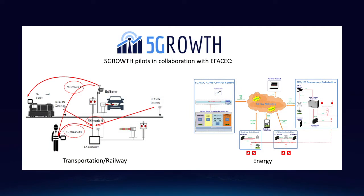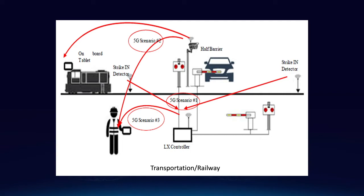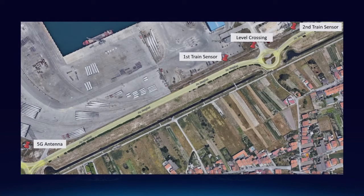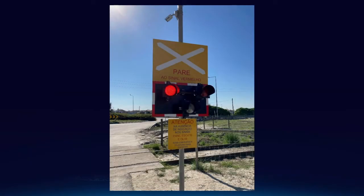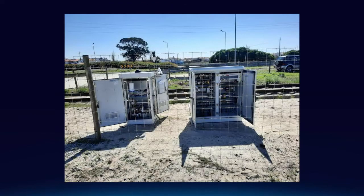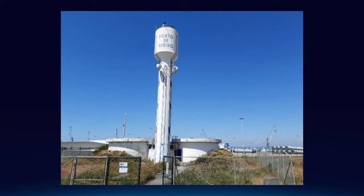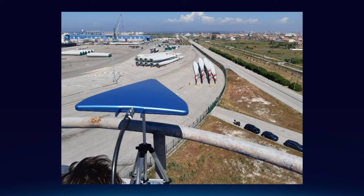The 5GVINI facility site has supported two technological pilots developed in the framework of the H2020 ICT-19 5Growth project in collaboration with EFASEC in the areas of transportation and energy. The main objective of the transportation pilot is to demonstrate and validate a 5G architecture to handle railway signaling operations in level crossings, requiring high throughput, reliable and secure communications. The technical solution aims to improve safety and reduce costs, both CAPEX and OPEX. Two use cases are demonstrated, addressing safety-critical and non-safety-critical communications.